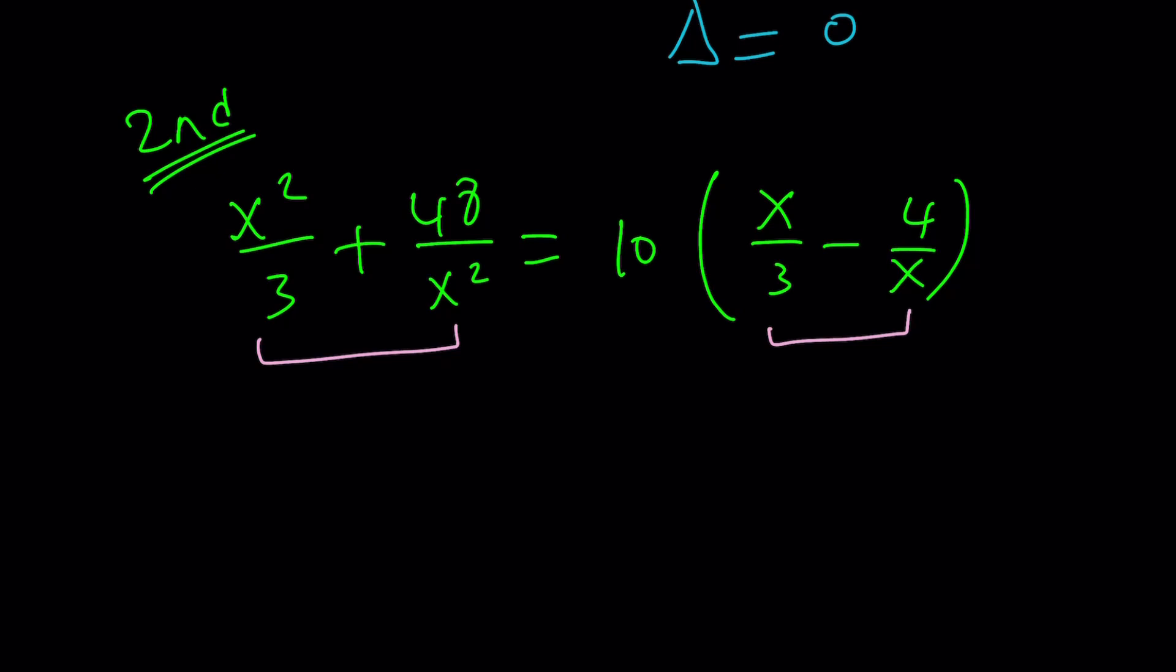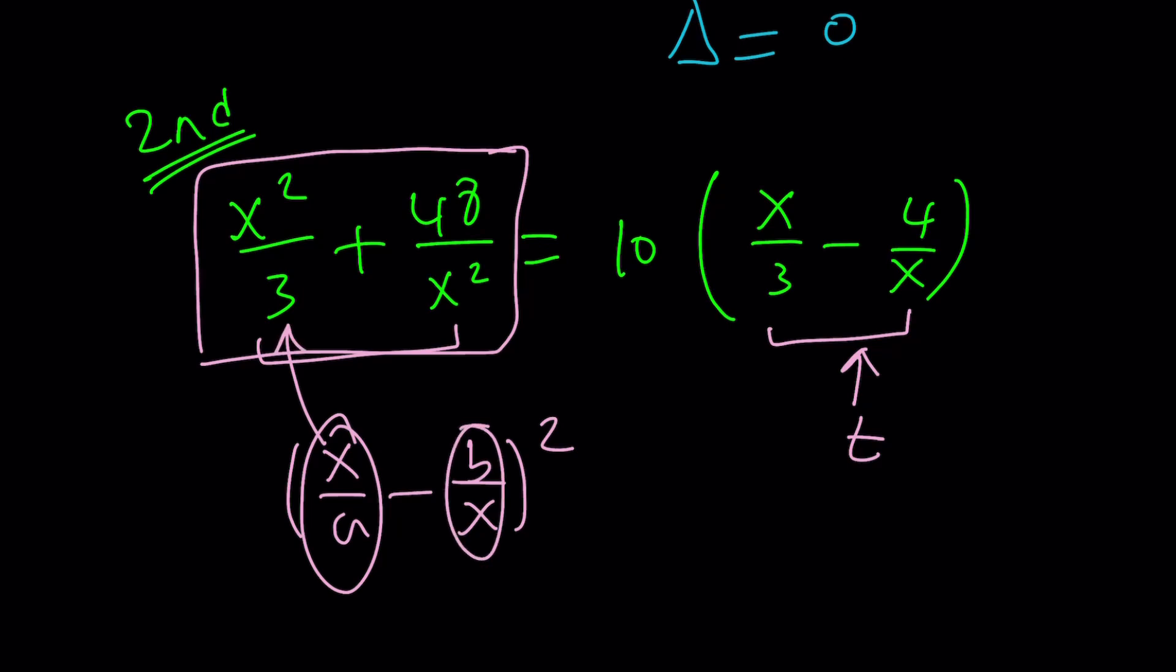Anyway, so we can do the following. We can go ahead and take this expression and call this something, how about t, and then square it. And the motivation behind squaring it is because I'll get something that somewhat looks like this, because notice that you have x over a minus b over x, and if you square this, you're going to get a term like x squared over a squared, which kind of looks like this, and if you square this, you're going to get b squared over x squared, which kind of looks like this.